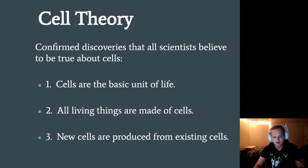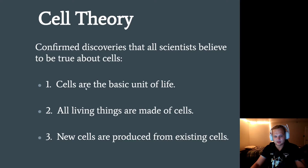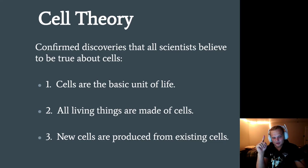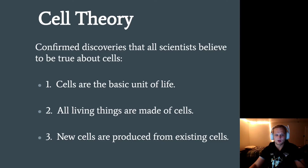This is the slide you want to highlight, underline, and star — because these three points are going to appear on our assessments. One: cells are the basic unit of life. Think of our characteristics of life. Two: all living things are made up of cells, whether it's a plant, an animal — whatever is living is made up of cells. Three: new cells are produced from existing cells. Keep those three things in mind. They're very similar, but remember there have to be three of them.